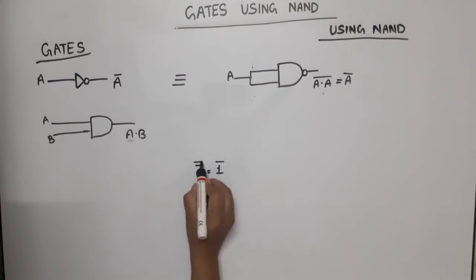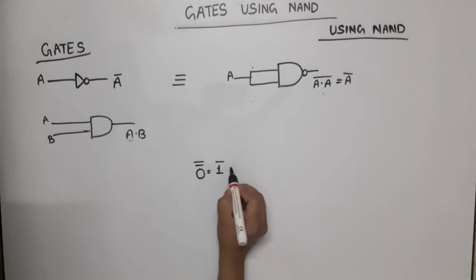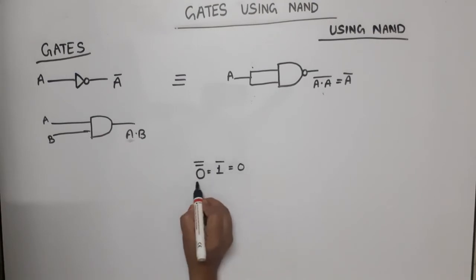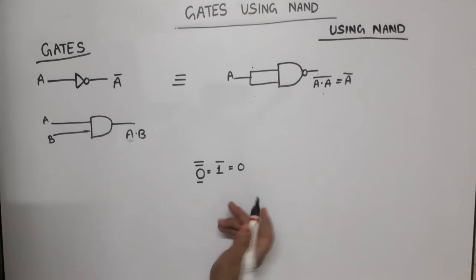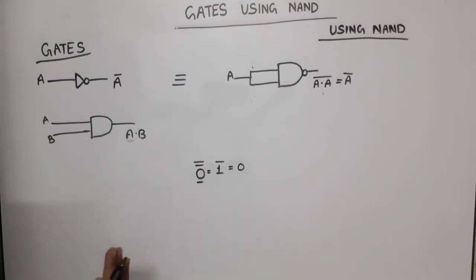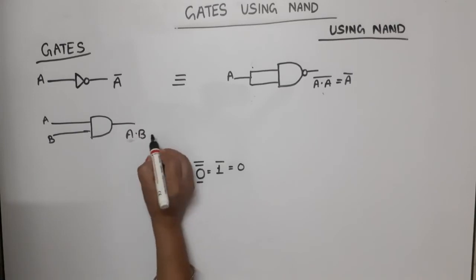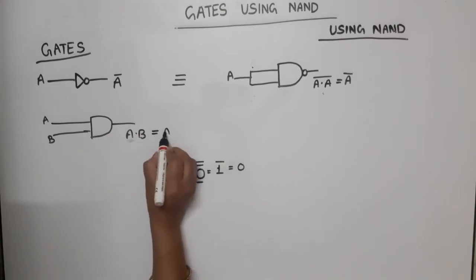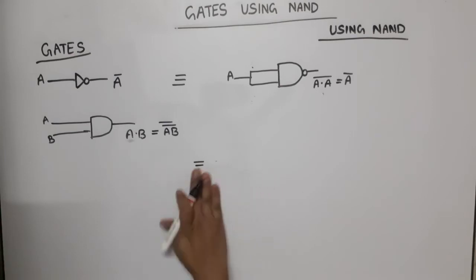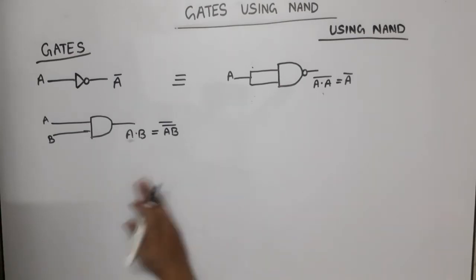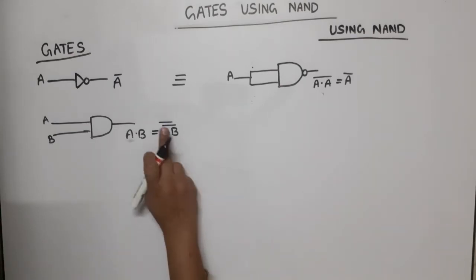And if we take the complement of one again, we get zero, which was the original number. So if we take the complement two times, we get the original number. Therefore A dot B can be written as A dot B bar, bar.